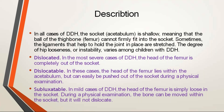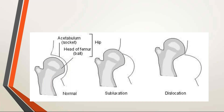The different terms used to define DDH are: dislocated, dislocatable, and subluxatable. Dislocated is the severe form where the head of the femur is completely out of the socket. Dislocatable means the head lies within the acetabulum but can easily be pushed out during physical examination. Subluxatable is the mild form where the femoral head is simply loose in the socket — it keeps moving in and out. The picture shows all types: normal, subluxated (part of the femoral head in and part out of the acetabulum), and fully dislocated (completely out of the acetabulum).